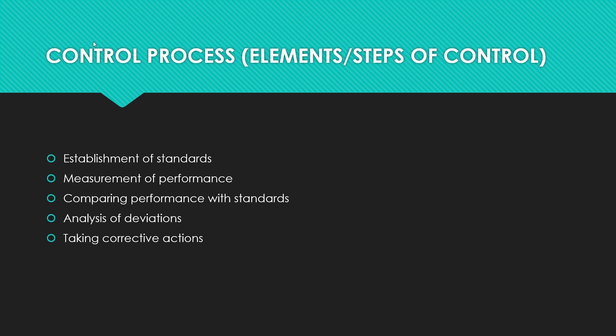Now we can study the process of control, also asked as steps in controlling or elements of controlling. First step: establishment of standards — standards indicate the criteria against which actual performance is measured; they reflect the desired results or acceptable level of performance. There are two types: quantitative standards, set in physical or monetary terms in production, sales, finance etc.; and qualitative standards, used in areas like goodwill, employee morale, motivation, and industrial relations, where standards are laid down in intangible terms.